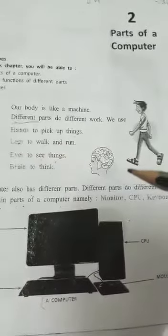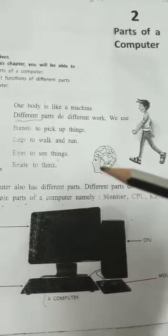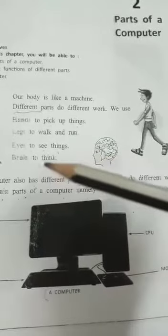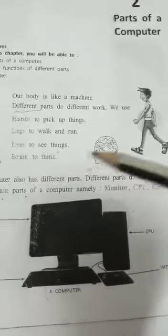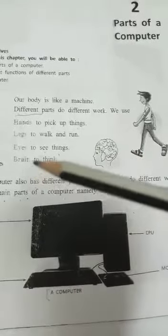Next, legs to walk and run. Yes, we can walk and run with our legs. Eyes, we can see the different things with our eyes. This is the most important part. Yes, you can see different things in this world, the beauty of the world you can see from your eyes.